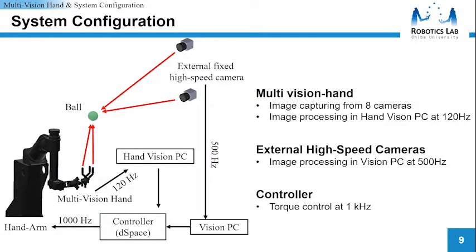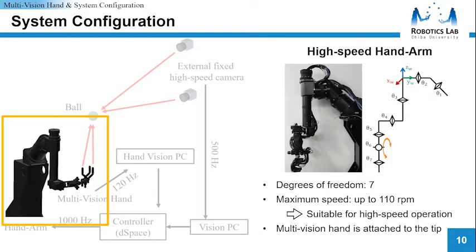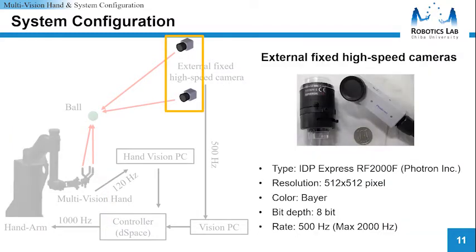This is our system configuration. It tracks a ball with multi-vision hand and two external fixed high-speed cameras. Multi-vision hand image processing and external high-speed cameras image processing are done on different PCs respectively. The control joint angle command values are sent at 1000 Hz. The high-speed arm consists of 7 DOF. Therefore, various movements are possible. Also, high-speed motion is possible since the reduction ratio is small and maximum speed is up to 110 RPM for each joint. The multi-vision hand is attached to the tip of this arm. We use the high-speed vision platform called IDP Express ROF-2000L as external fixed high-speed cameras. The platform can acquire 512 x 512 pixel 8-bit grayscale information at the rate of up to 2000 Hz. In the experiment, the rate was set to 500 Hz.